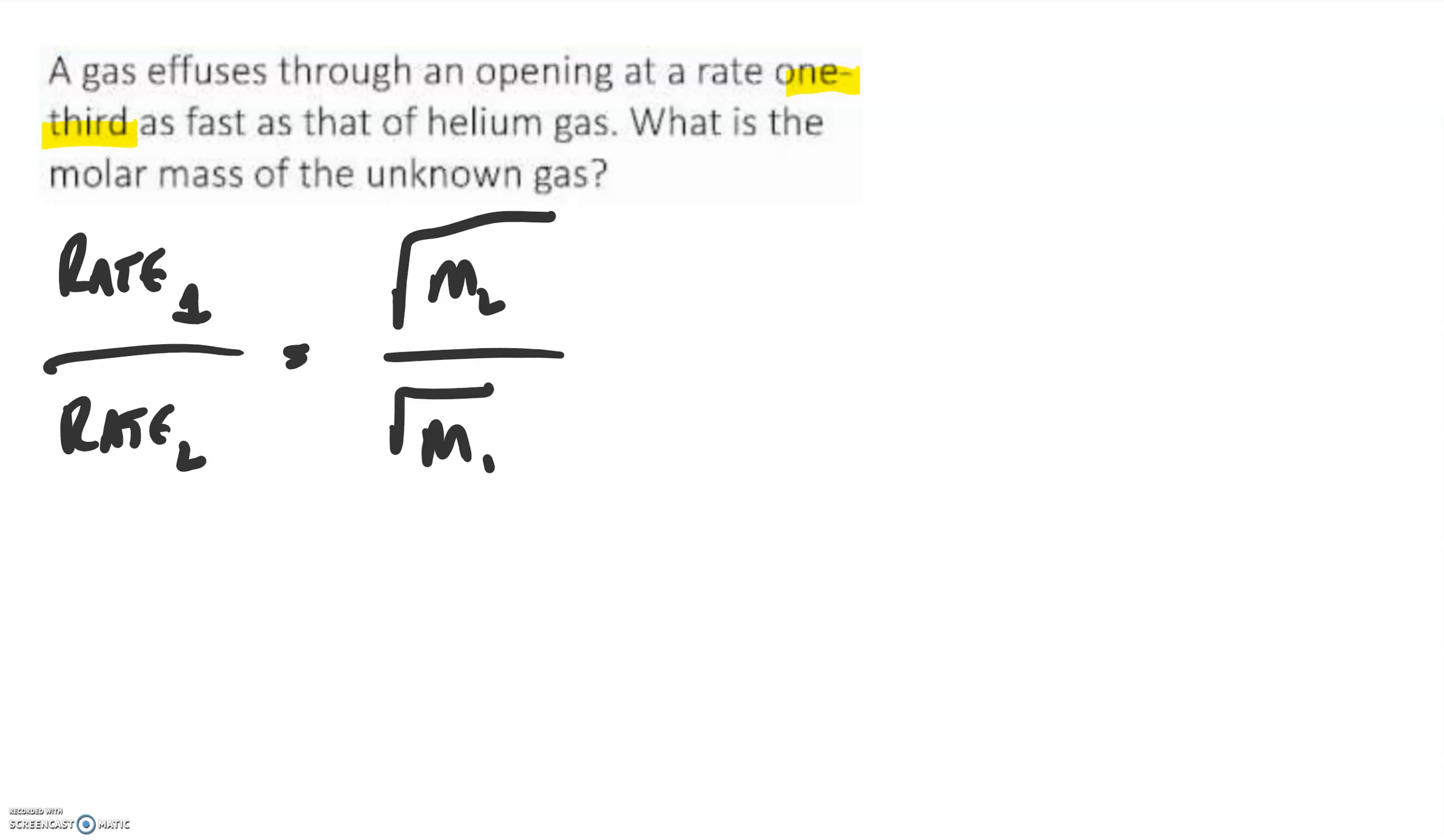I always like to make the known number 1. So we'll take helium and we'll make that rate 1. Well, it says that the rate of the unknown is one-third as fast. That means that the helium is three times as fast. So we'll make rate 1, our helium, 3. We'll make rate 2, our unknown, 1.